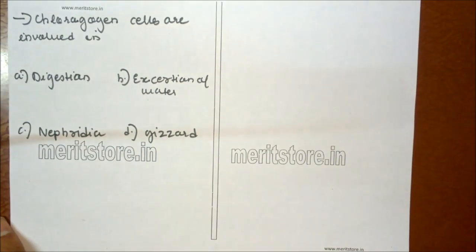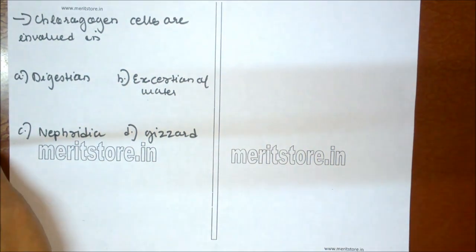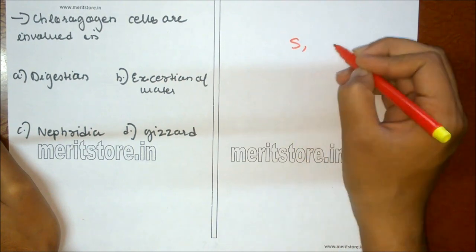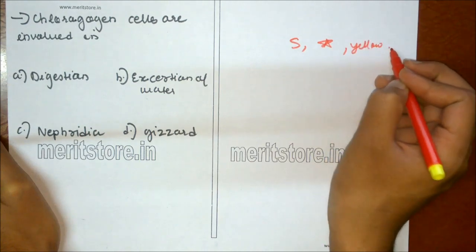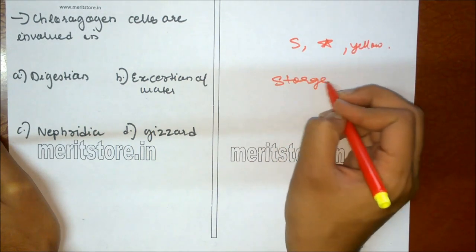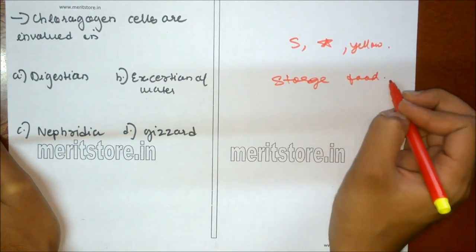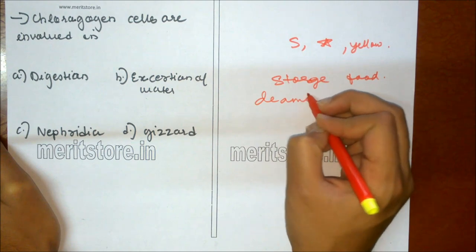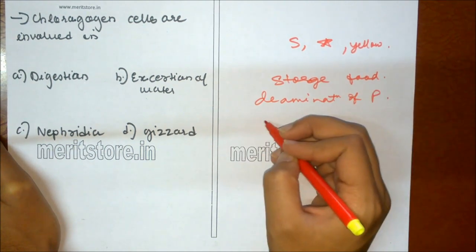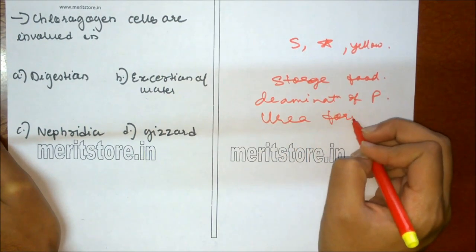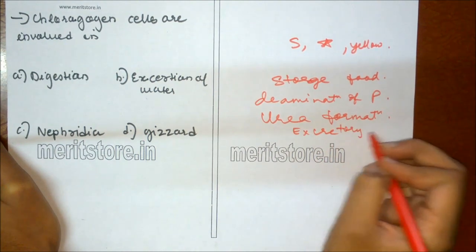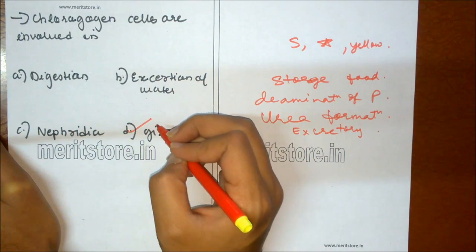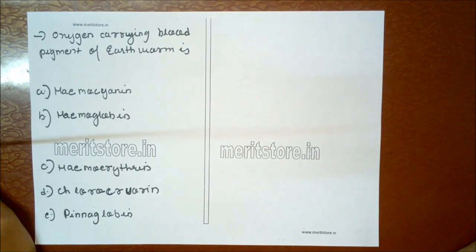In arthropods, chloragogen cells are involved in: A digestion, B excretion of water, C nephridia, D gizzard. Chloragogen cells are small, star-shaped yellow cells concerned with storage of reserve food, deamination of proteins, formation of urea, and also excretory function. So option D is the correct answer.